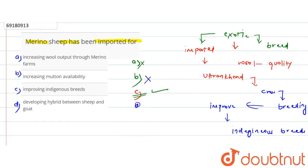This is the main reason why we import Merino sheep for cross-breeding. The answer about developing the hybrid between sheep and goats is incorrect. Because this Merino sheep has been used for cross-breeding between Merino sheep and indigenous breeds. So, my answer will be correct in this case. That will be option C.